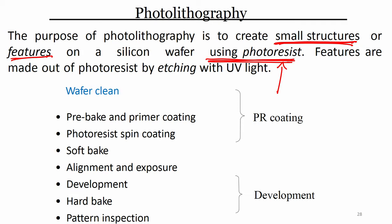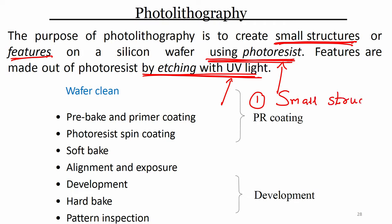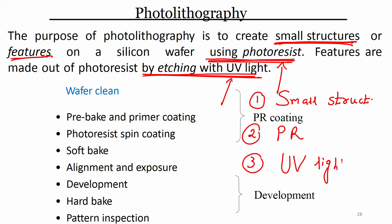Features are made out of photoresist by etching with UV light. Three key things to understand: first, you can create small structures; second, you must use photoresist; third, you must expose and pattern this photoresist with UV light.